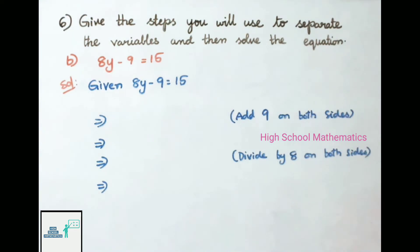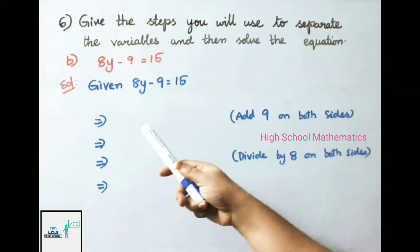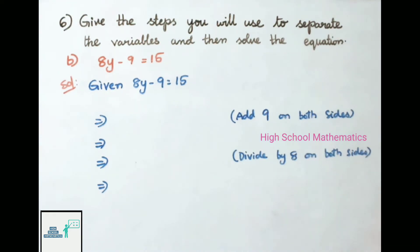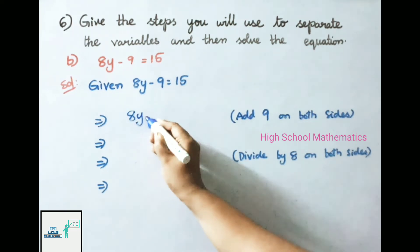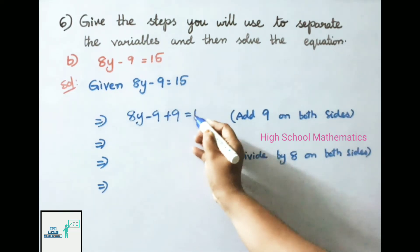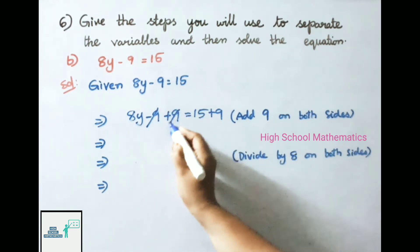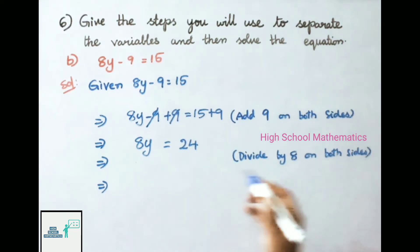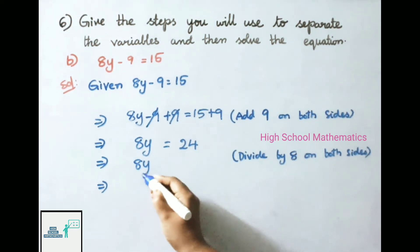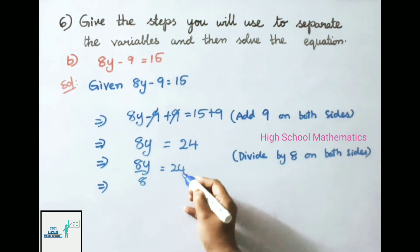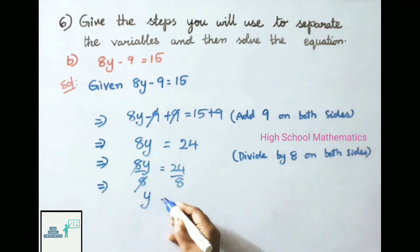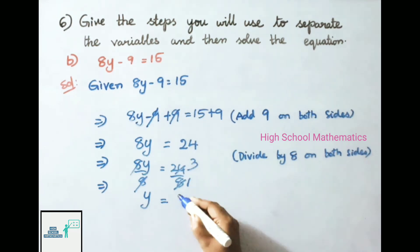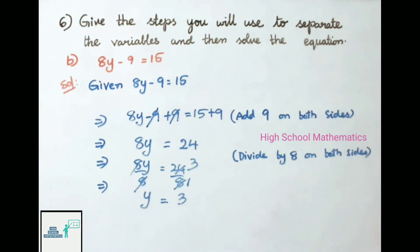Part B: 8y - 9 = 15. Adding 9 on both sides: 8y = 15 + 9 = 24. Dividing by 8 on both sides: y = 24 ÷ 8 = 3. Therefore y = 3 is the solution for the given equation.